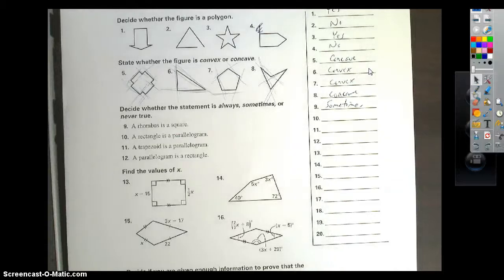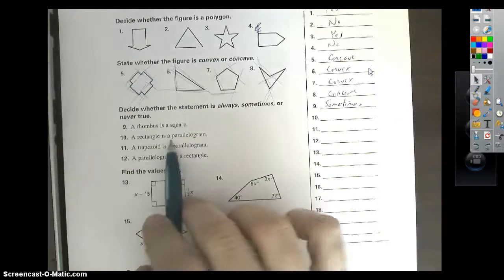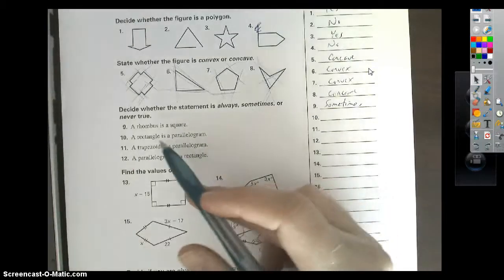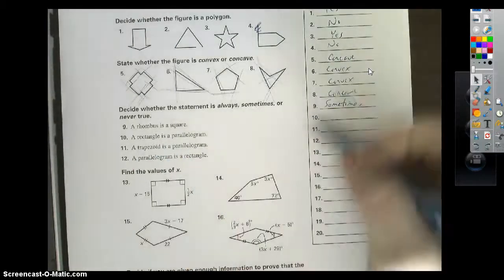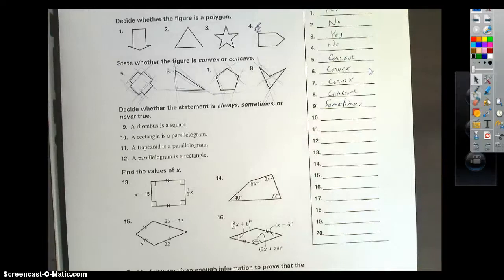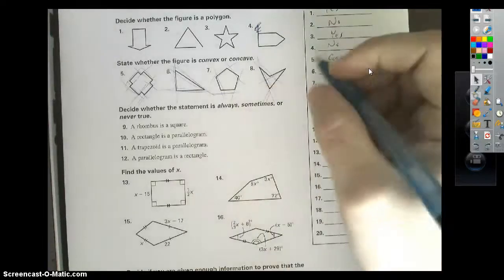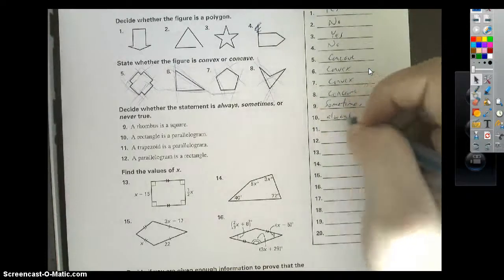Now, vice versa, a square is always a rhombus, but when it's going this way, it's always just sometimes. Number 10, a rectangle is a parallelogram. A rectangle has all the properties of a parallelogram. Opposite sides are parallel and congruent. Opposite angles are congruent. Adjacent angles add up to 180. Therefore, this is always.